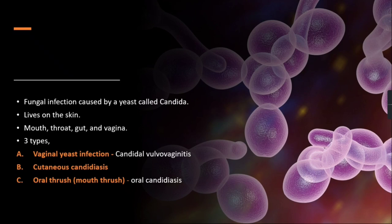Candidiasis infection occurs both internally and externally in the body. Externally, Candida lives on the skin and affects the cutaneous layer of the skin. Internally, Candida is present in the mouth, throat, gut, and vagina, and it will infect all of these parts. In the case of women, vagina is included along with mouth, throat, and gut.